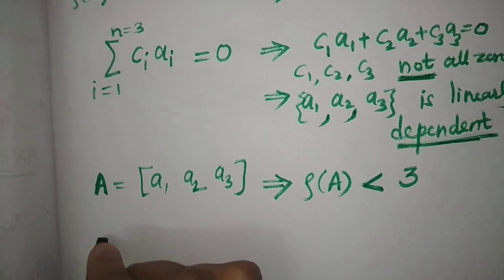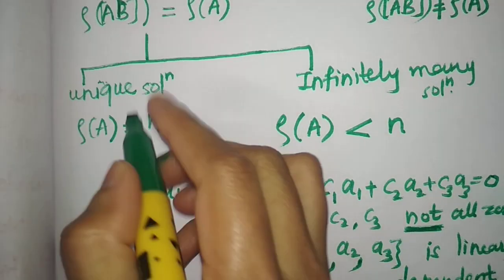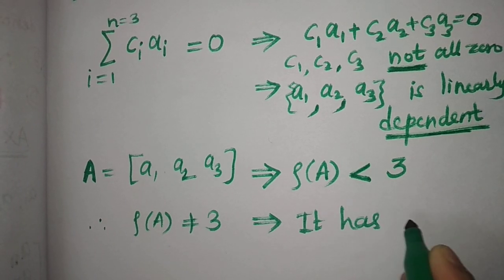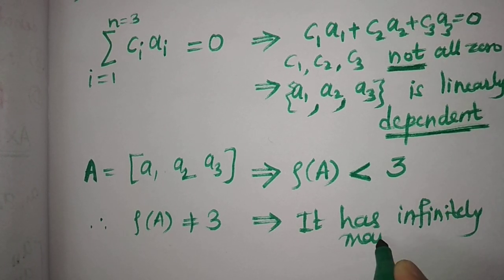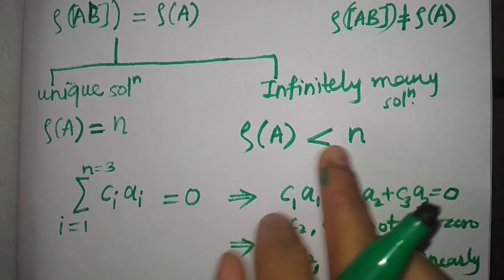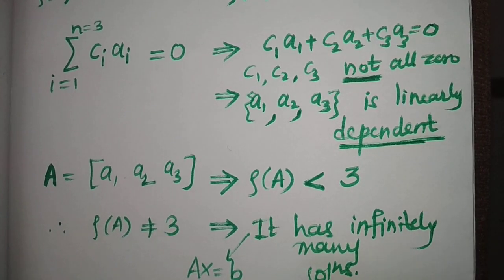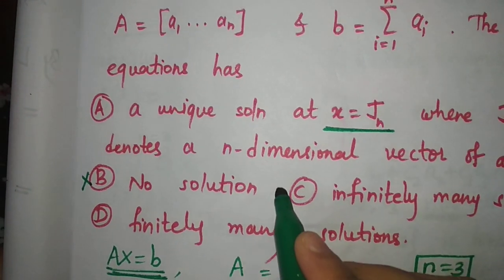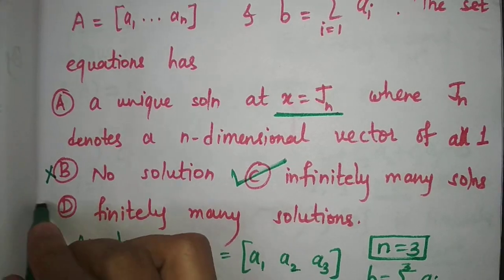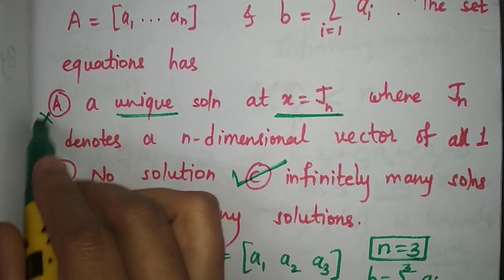Therefore, rank of A is not equal to 3, which means the system has infinitely many solutions. So option C is correct. Finitely many solutions is not a valid case — when finite, there must be a unique solution. Since there are infinitely many solutions, option A (unique solution) is also wrong, and option B (no solution) is also wrong.